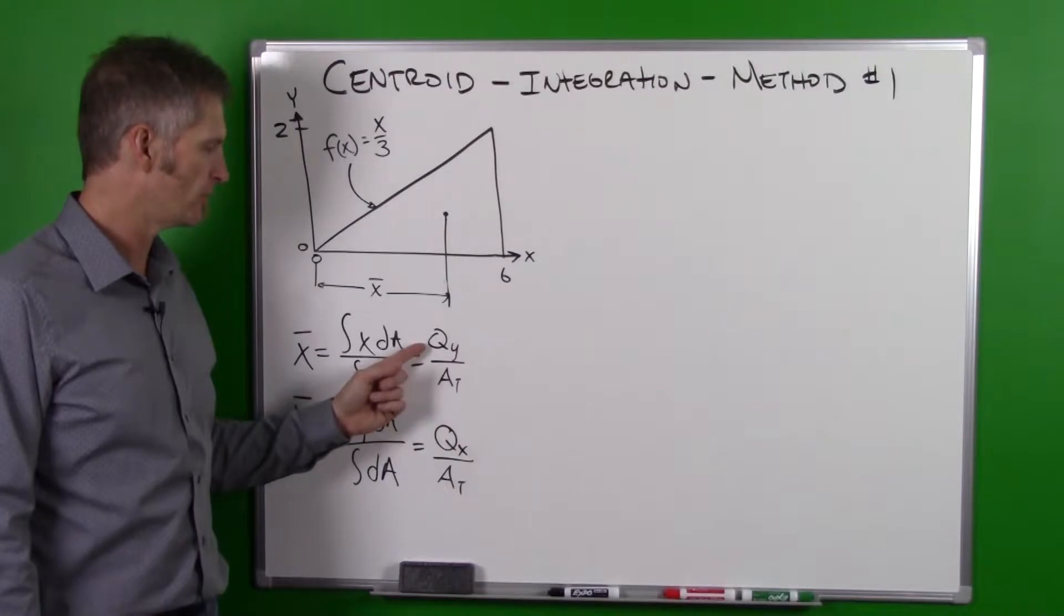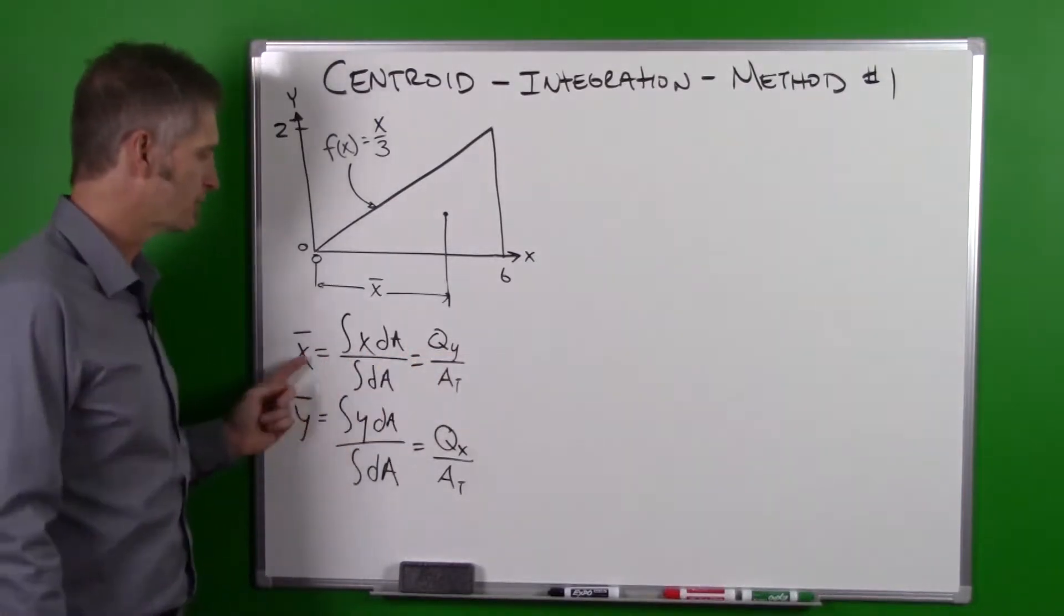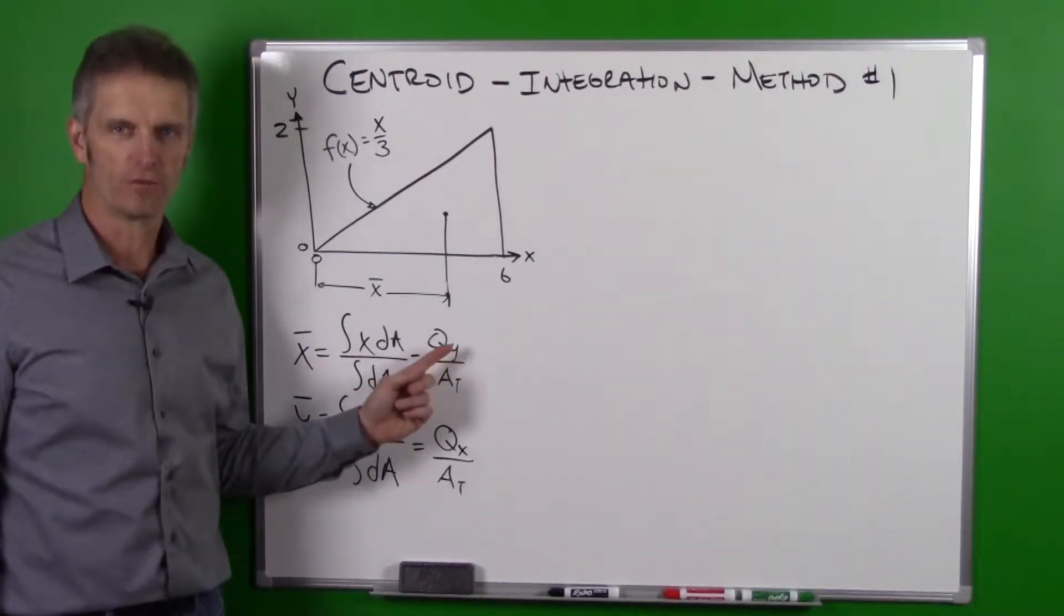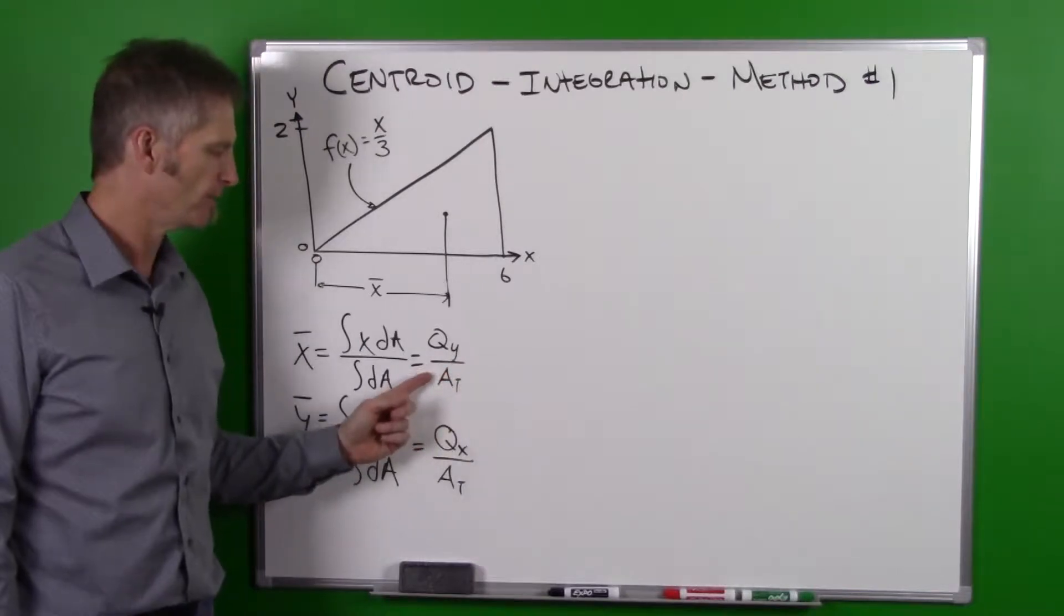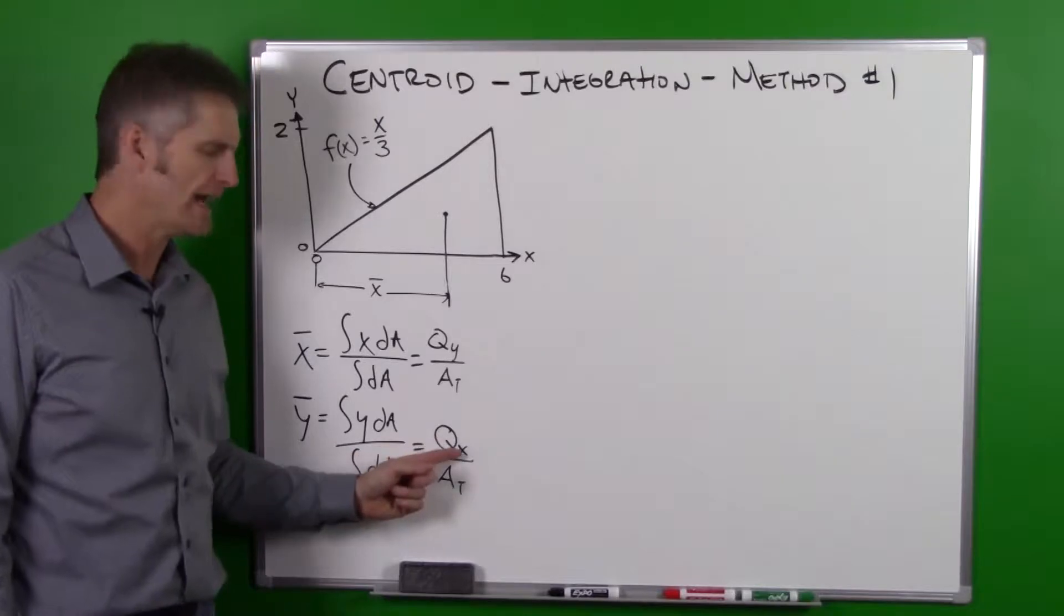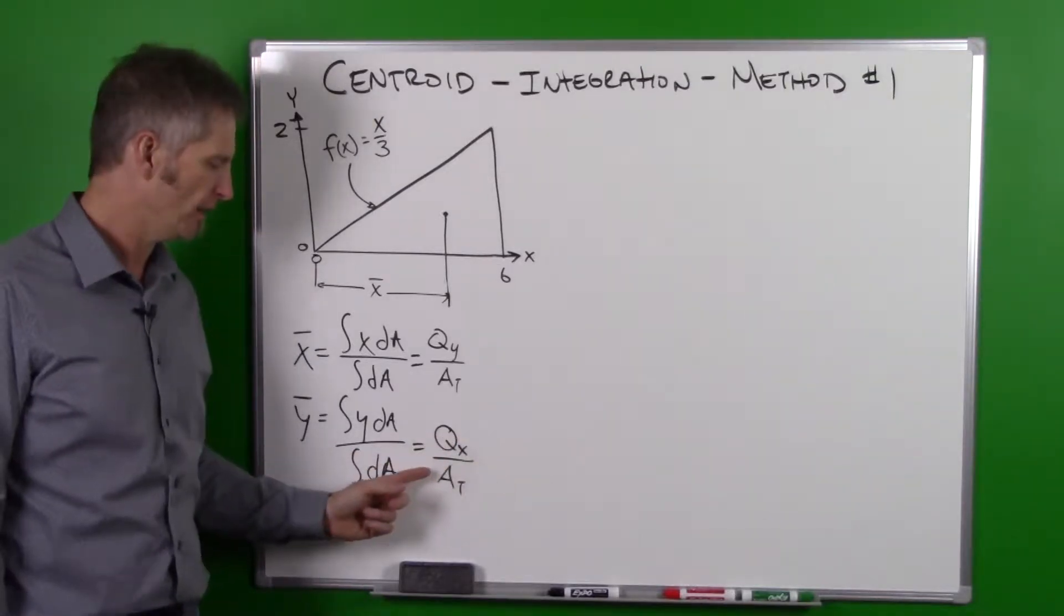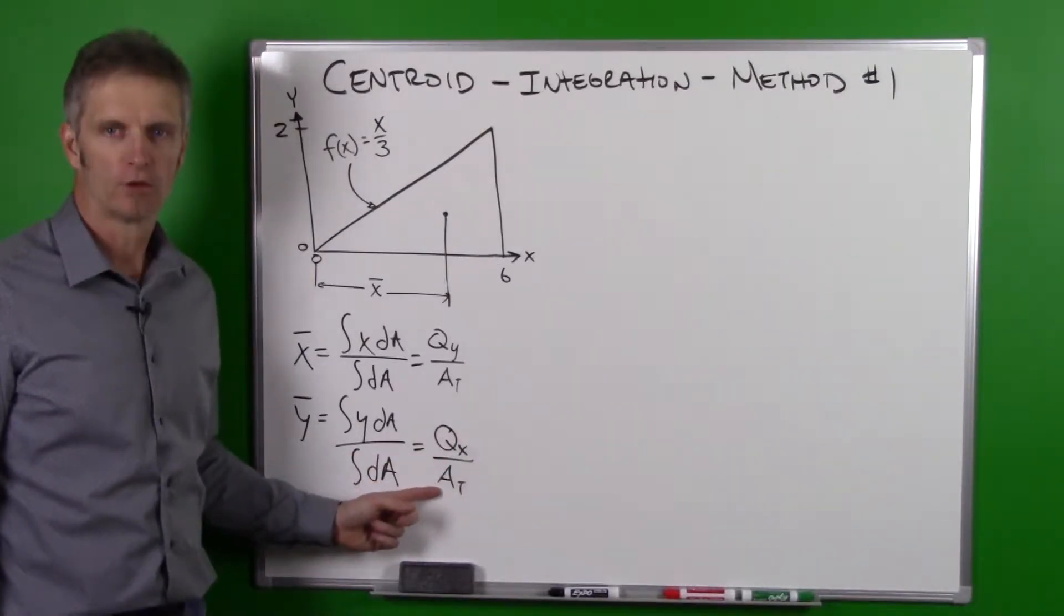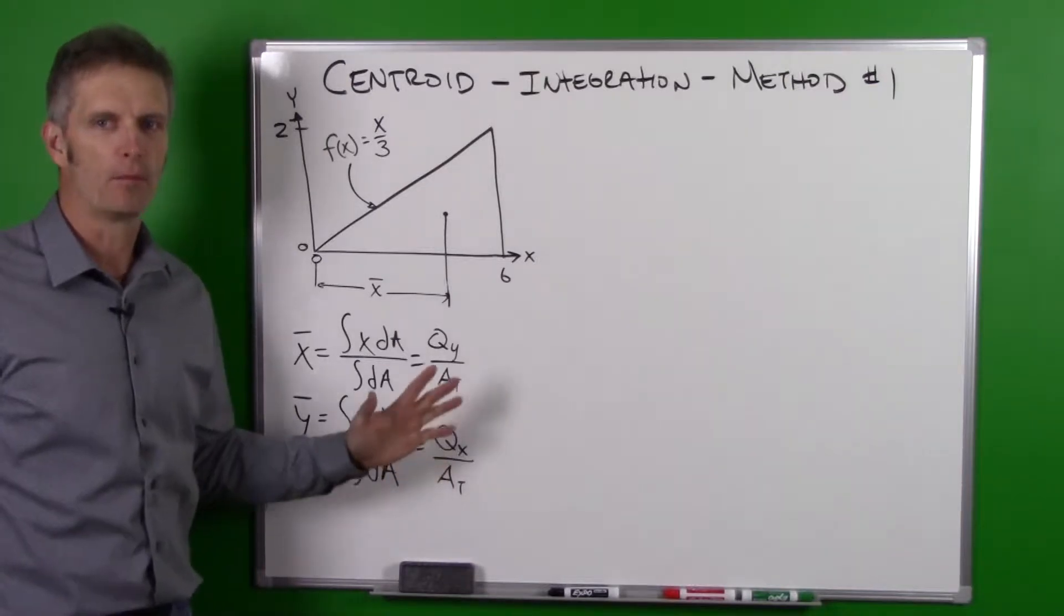Remember this simplifies down to: x bar is qy which is our first moment of area divided by our total area, and y bar is qx which is our first moment of area divided by our total area. So we need to remember those are our fundamentals.